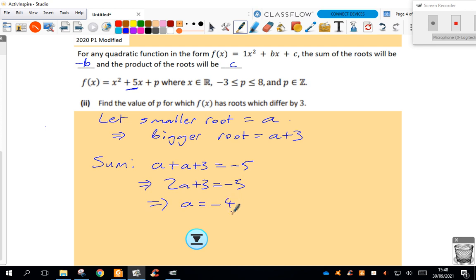So my smaller root is negative 4, which means my bigger root, a plus 3, will be negative 4 plus 3, which is negative 1. So my roots would be negative 4 and negative 1.